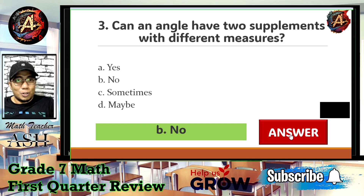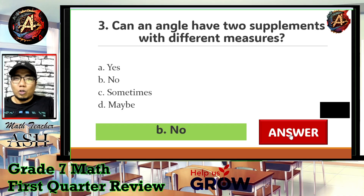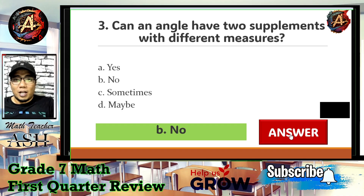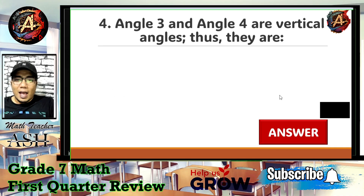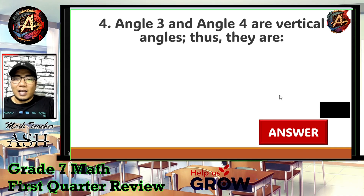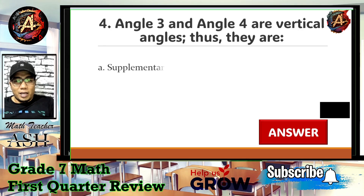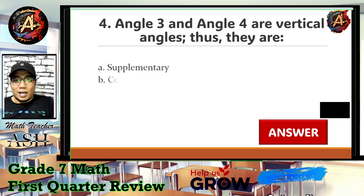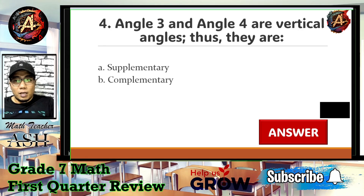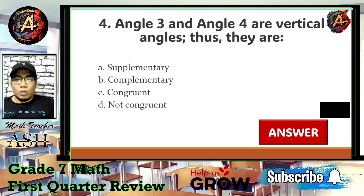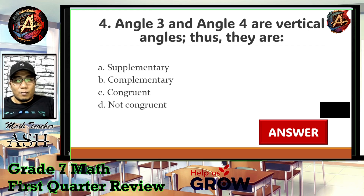Question number four: Angle 3 and Angle 4 are vertical angles. Thus they are — A) supplementary, B) complementary, C) congruent, or D) not congruent?